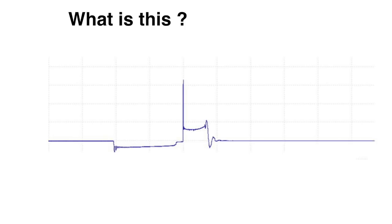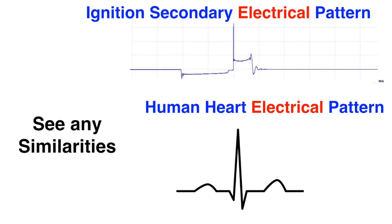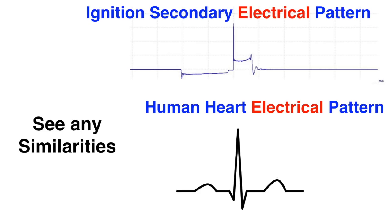What is this? And what is this? Do you see any similarities between the two images? The top one is the ignition secondary electrical pattern and the bottom one is the human heart electrical pattern. We call these waveforms.